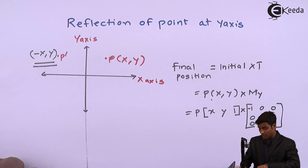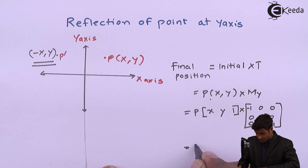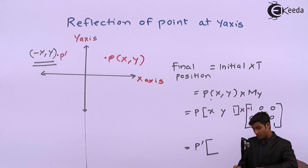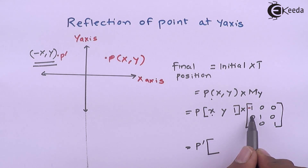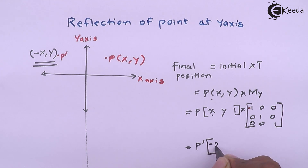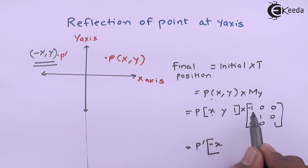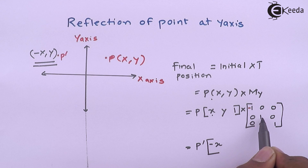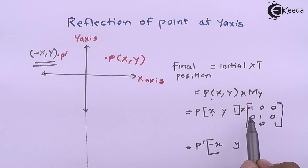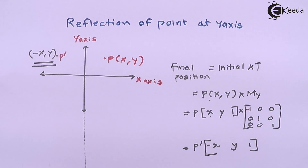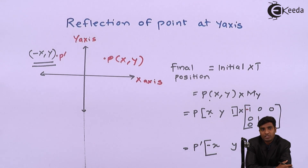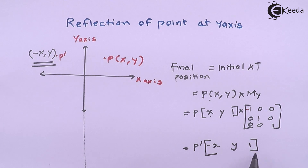I will multiply the initial matrix with the transformation matrix to get P-dash, the final position. Multiplying: x × (-1) = -x, x × 0 = 0, x × 0 = 0 — so the first coordinate is -x. Then y × 0 = 0, y × 1 = y, y × 0 = 0, giving 0 + y + 0 = y. For the last column: 1 × 0 = 0, 1 × 0 = 0, 1 × 1 = 1. So the final position P-dash is [-x, y, 1].